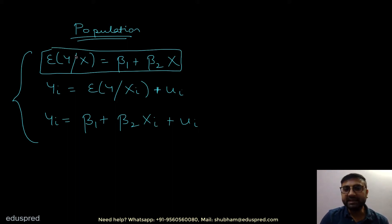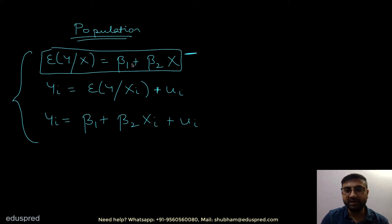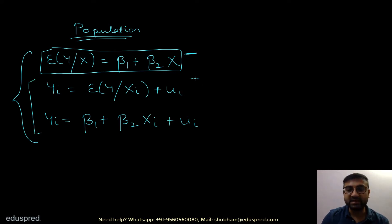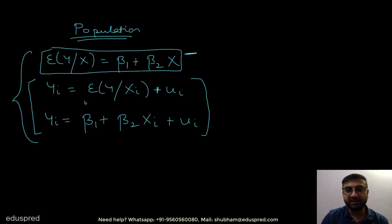When we write the equation of the population regression line, there is no error term in this equation. So in the first equation, there is no error term. The error term comes into equation number two and equation number three. Basically, the first equation is written at an average level, so it does not have an error term.